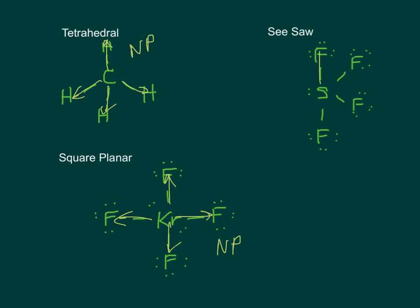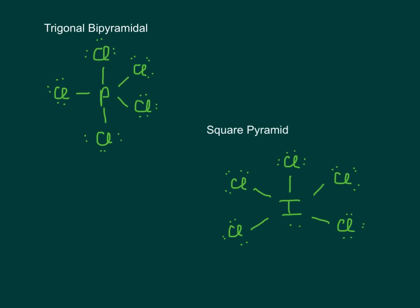Seesaw, on the other hand, the up cancels out with the down, but then I've got these two kind of off to the right, and there's nothing over here. So these do not cancel, and seesaw tends to be polar.